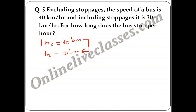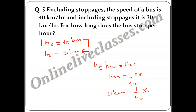The bus is short by 10 km because it was stopped during that time. Time to travel 10 km at 40 km/hr = 10/40 = 1/4 hour. Multiplying by 60 gives 15 minutes. So the bus stops for 15 minutes per hour. Kindly pause the video and note down the solution, then move on to the next question.